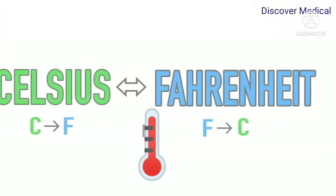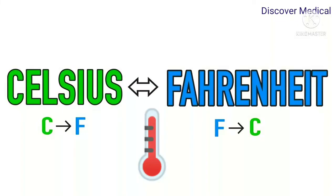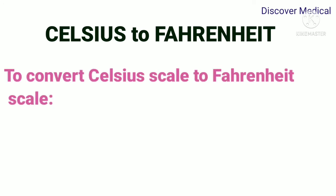Hey guys, welcome to our channel. Today we're going to see how to convert Celsius into Fahrenheit and Fahrenheit into Celsius. Let's see how to convert Celsius scale to Fahrenheit scale. We have a formula: Fahrenheit equals Celsius times 9 by 5 plus 32.